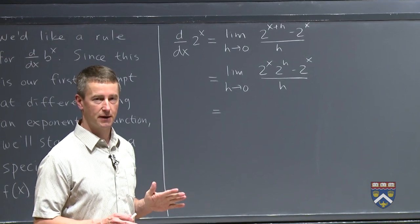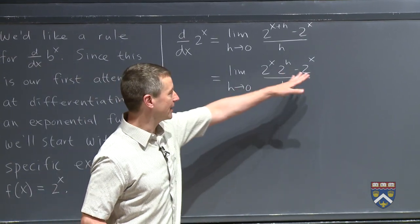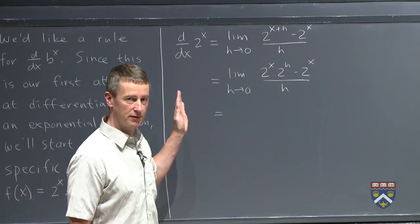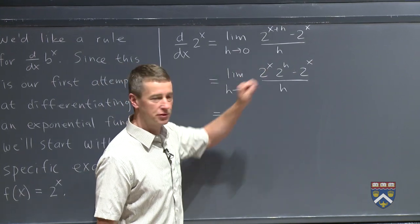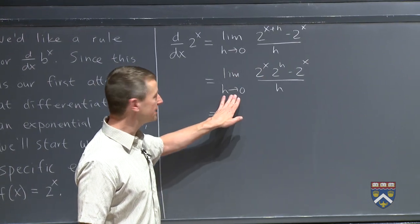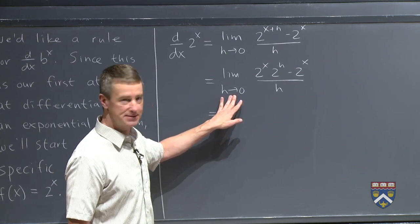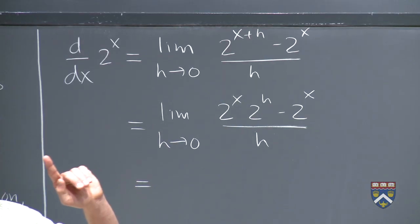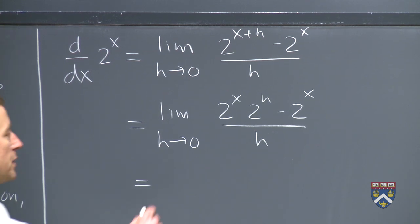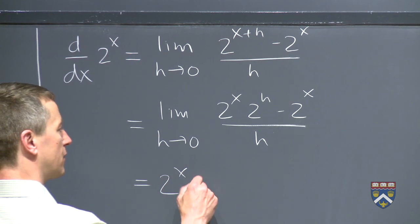So just as we did with our constant multiple rule, where we had a k on the inside and we pulled it all the way out front of the limit, we can do the same thing with this 2 to the x. Because again, from the point of view of this limit operator, h going to 0, it doesn't matter whether we multiply by the 2 to the x on the inside or on the outside. So we can factor this 2 to the x all the way out front.